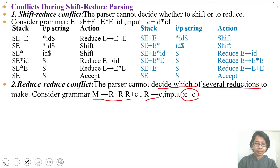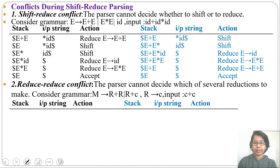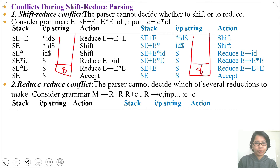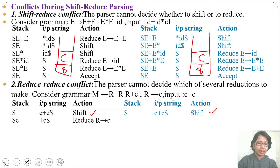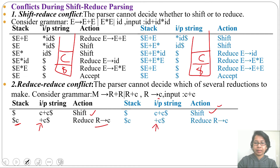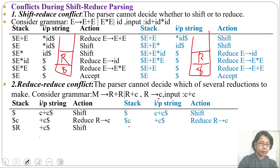We are considering one input string: C plus C. I will do this the same way as before, considering two parsers, each with three columns — stack, input string, and action. In both cases, the stack contains dollar, the input string contains C plus C dollar, and the first action will be shift. Now C will shift onto the stack. Stack contains C, the input pointer is pointing to plus, and C is a handle so we can reduce to R — same in both cases. For the first parser, stack contains R and the input pointer is pointing to plus; R is not a handle so we will shift the plus symbol onto the stack.